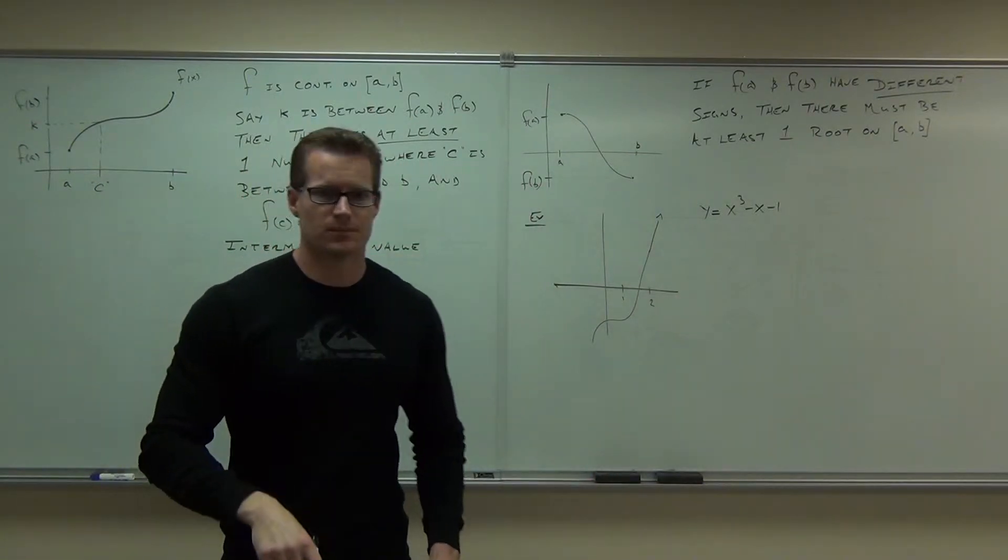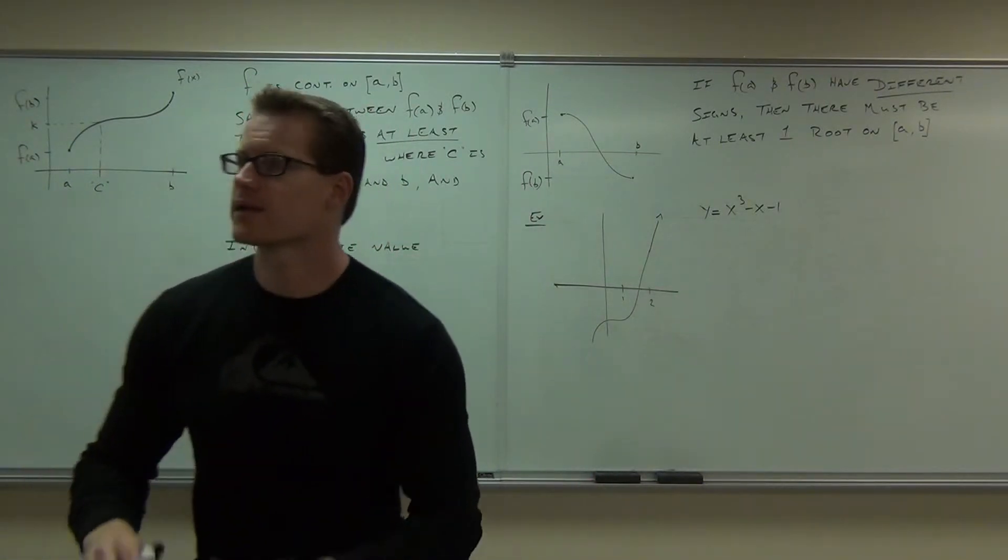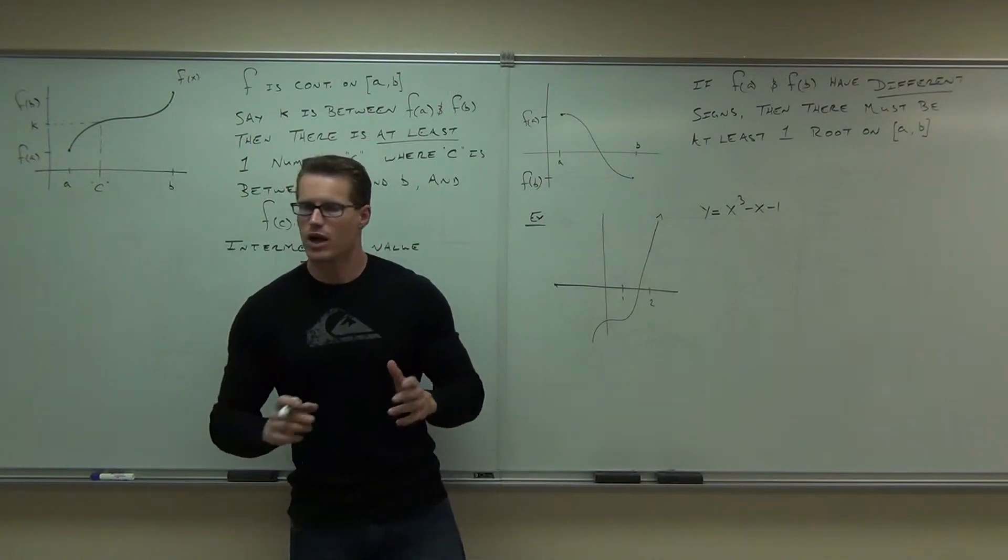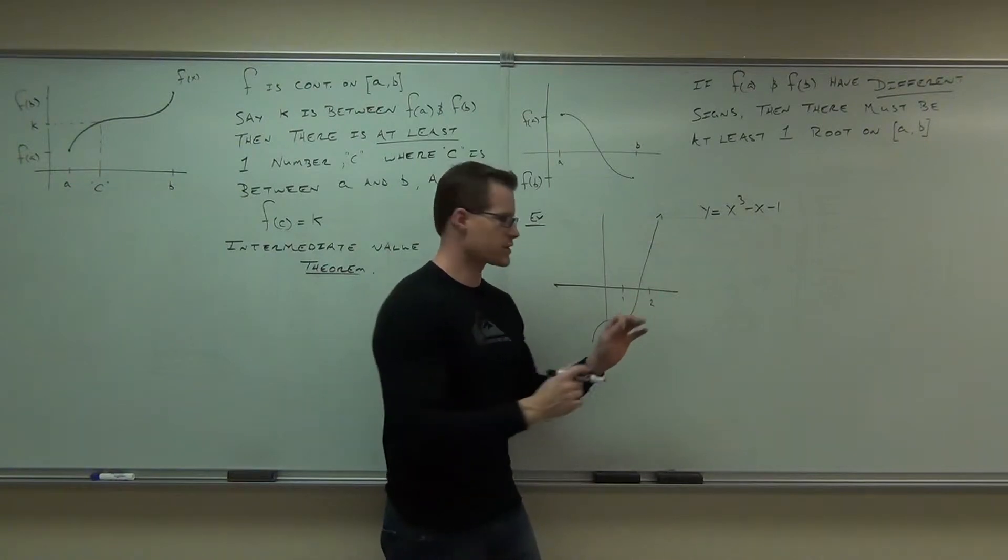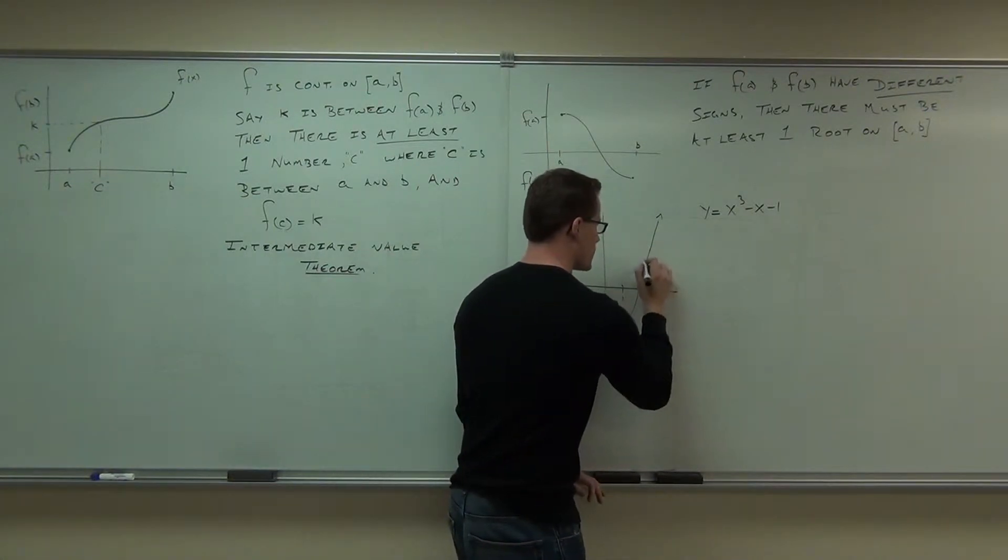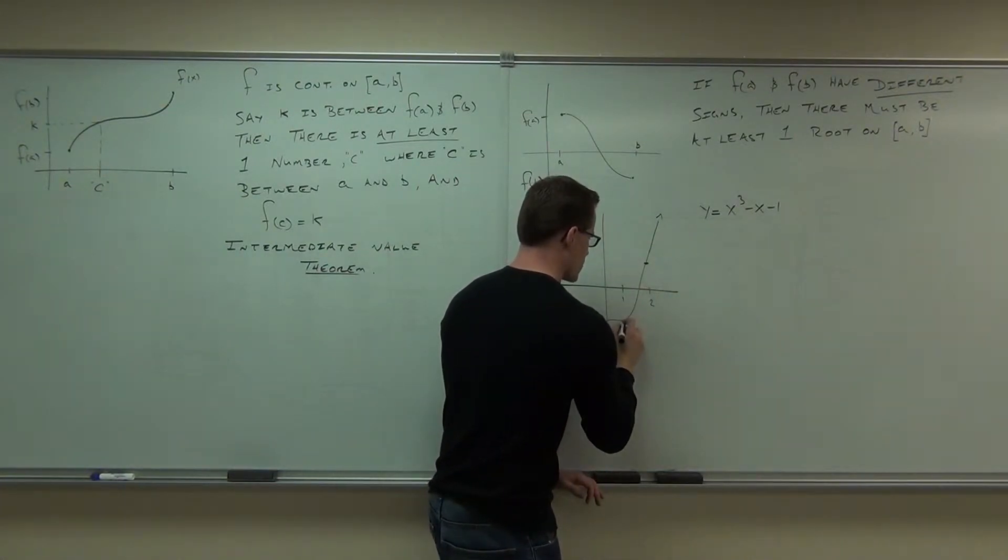Well, here's the deal. I'd plug in some numbers at some point, and what I would find is that when I plugged in 1 and when I plugged in 2, they had different signs. For instance, f of 2 was up here. f of 1 was down here.